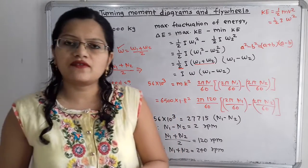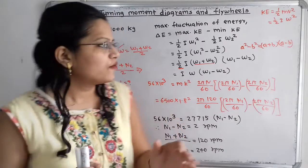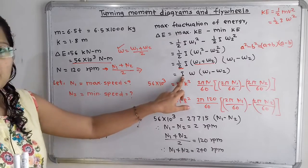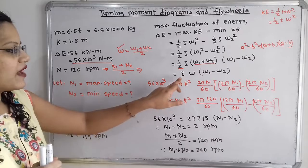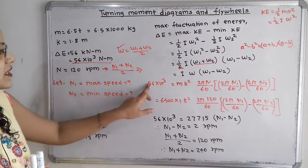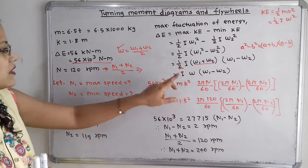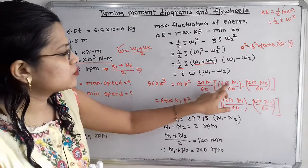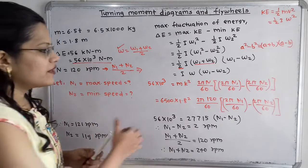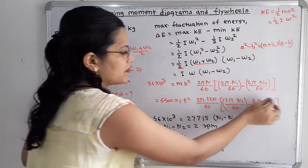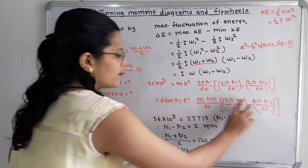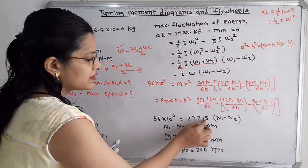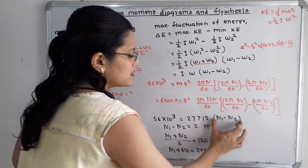Now substituting the given data: the mass moment of inertia I equals mk squared. The maximum fluctuation of energy delta E is 56 into 10 raised to 3. Omega equals 2 pi times 120 divided by 60. For omega 1 minus omega 2, we write 2 pi N1 by 60 minus 2 pi N2 by 60, and taking 2 pi by 60 as common, we get 2 pi by 60 times (N1 minus N2). Putting all values: 56 into 10 raised to 3 equals 27,715 times (N1 minus N2).